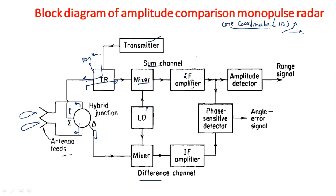The IF signal is given to the IF amplifier because the RF signal is converted into IF. The output of the IF amplifier is given to the amplitude detector, and the same output is given to the phase-sensitive detector connected with the difference channel. The phase-sensitive detector gives the angle error information, and the amplitude detector gives the range information.